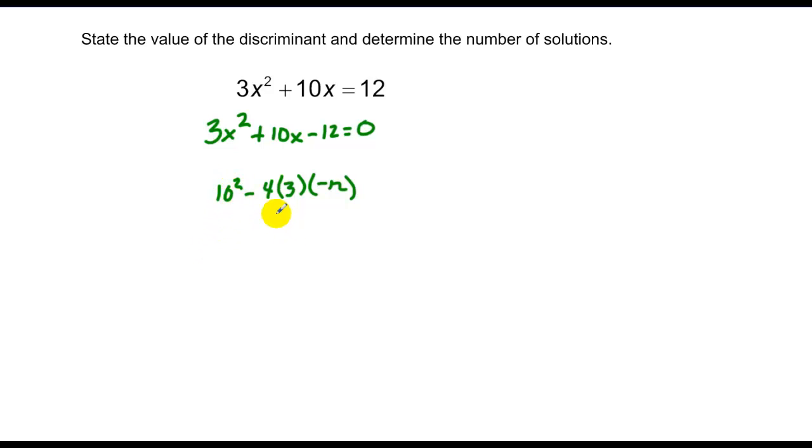And really, all I need to do is look for whether this is positive or negative. This is 100, this is positive 144. And I know that that's greater than zero, so therefore I have two intercepts or solutions.